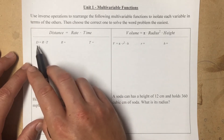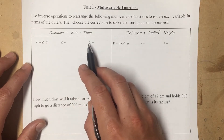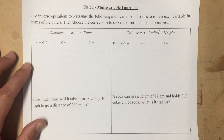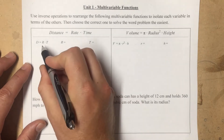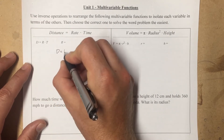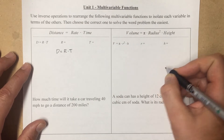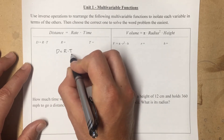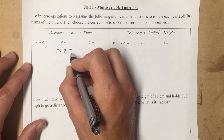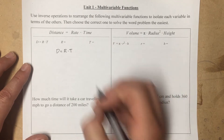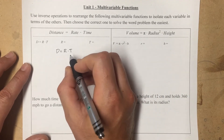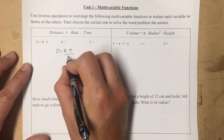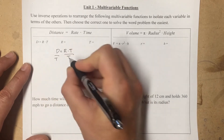We need to rearrange these variables to solve for rate, and then again to solve for time in terms of the other variables. To isolate rate, we start with our original equation: distance equals rate times time. To get rate by itself, we need to get rid of the t on that side. We use the inverse operation — since this is multiplication, the inverse is division. So we divide by t on both sides to keep the equation balanced.